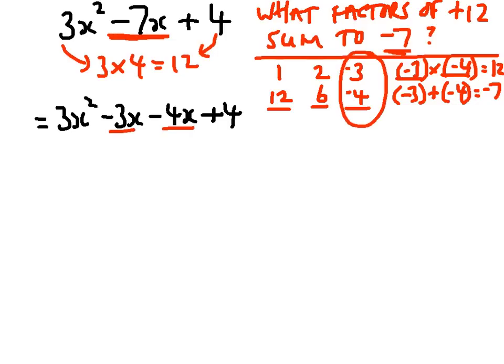And obviously, if I start off with negative 3x and I take away negative 4x, I'm ending up with negative 7x. So those two things are definitely equivalent. The first thing, I need to factorize the first two, and then I need to factorize the second two.